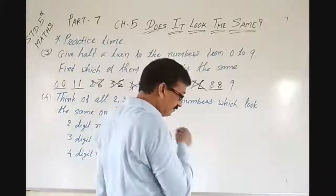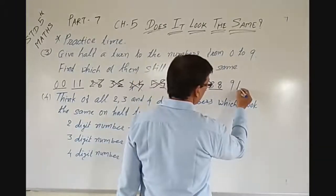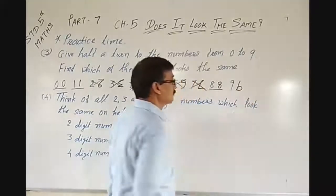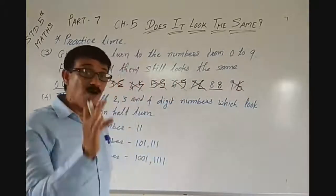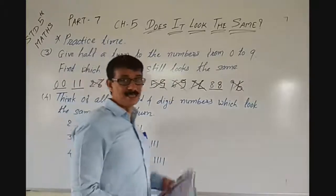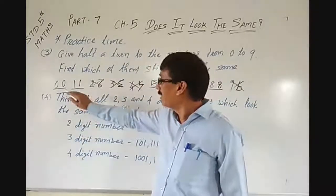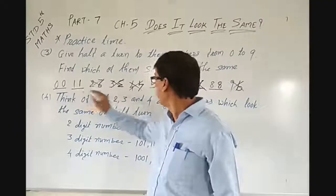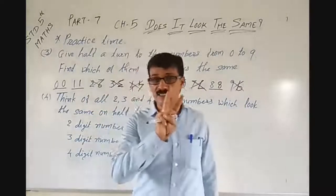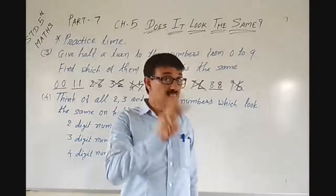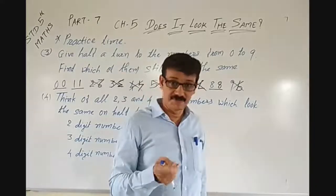And 9 — if it is 9, it will look something like this — that is also not the same. So how many digits look the same? 0, 1, and 8 — total 3 digits which look the same after giving a half turn.